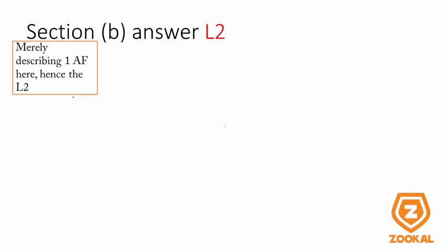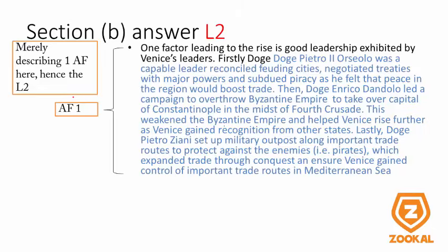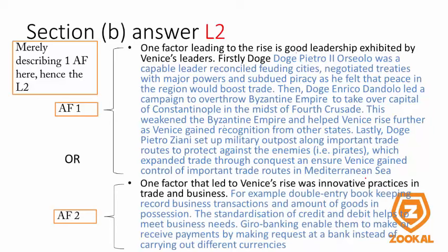For L2, you are just merely describing one of the alternative factors. The first example is good leadership — you talk about the three doges: Doge Pietro II Orseolo, Doge Enrico Dandolo, about how he helped capture and take over Constantinople, and also Doge Pietro Ziani, who helped guard against and prevent invasion by pirates and led to the expansion of Venice. Alternatively, you are just merely describing innovative practices on trade and business — general banking and double entry bookkeeping.